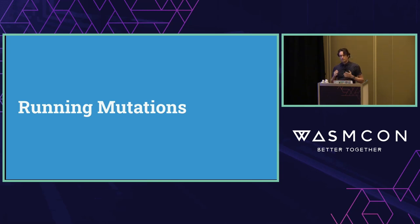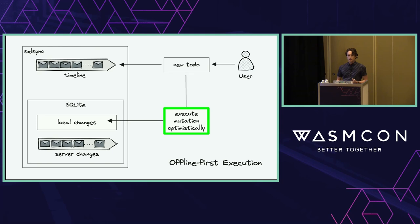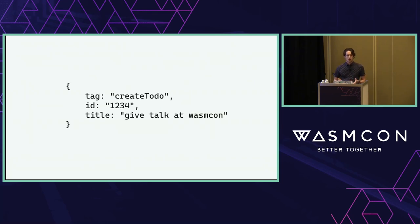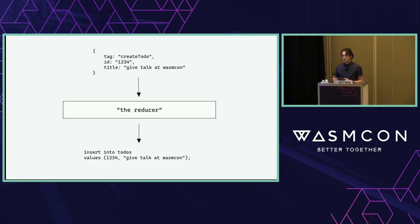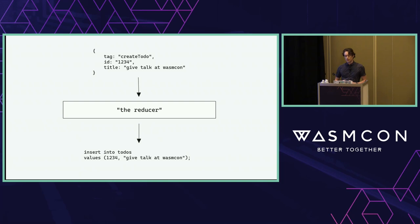Now for maybe the most exciting thing I did. We have mutations — like new to-do — and we want to execute them optimistically on the client and eventually on the server. But SQLite doesn't have a command called new-to-do — there needs to be some translation. So imagine we have this action, create-to-do with "give talk at WasmCon" — that's our mutation, the representation of user intent. We want to turn that into an insert query. We need something in the middle: a reducer that translates user intent to one or more SQL operations that actually apply it to a SQLite database.